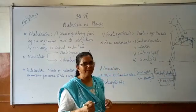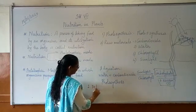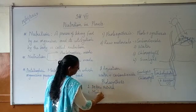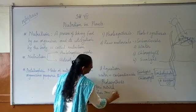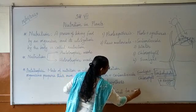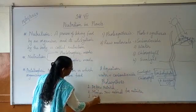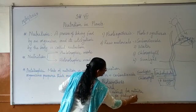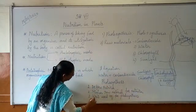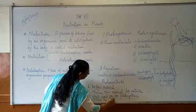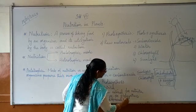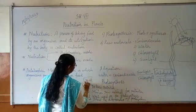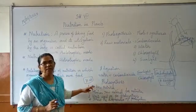Okay children. Now the assignment questions. First one: define nutrition. Second one: mention the raw materials for photosynthesis. Third one: write the word equation for photosynthesis. Fourth one: draw the diagrammatic representation of photosynthesis. This is your homework. You have to take your book and write all these answers in your assignment.